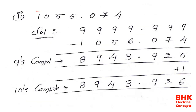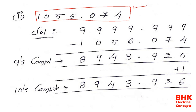Now for example number 2, the decimal number given is 1056.074. We need to find the tens complement for this number. First, to get the tens complement of any decimal number, we must find the nines complement. To find the nines complement we subtract each digit of the decimal number from 9, matching the format of the given number.